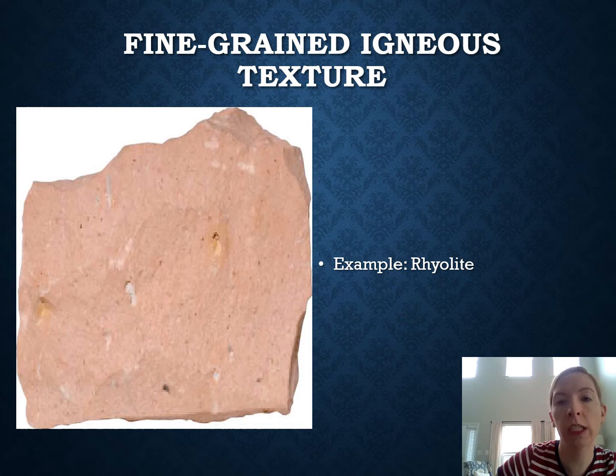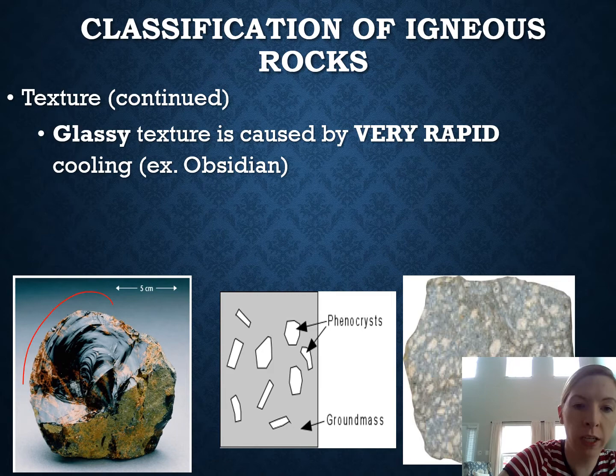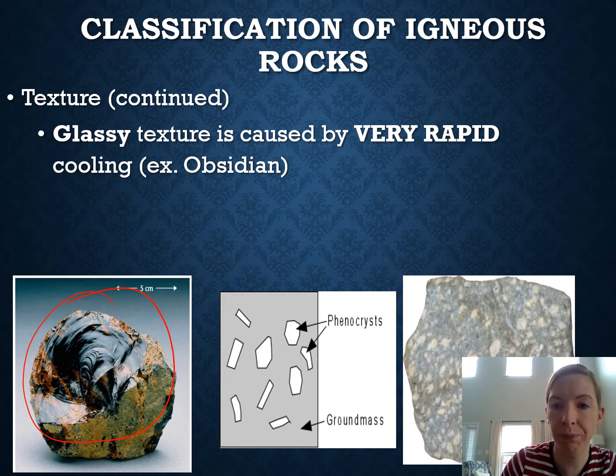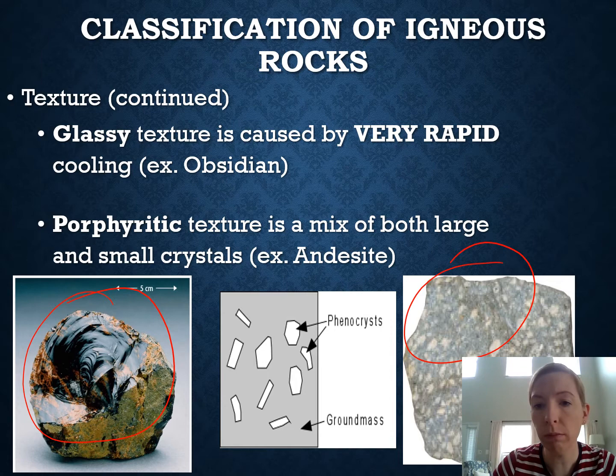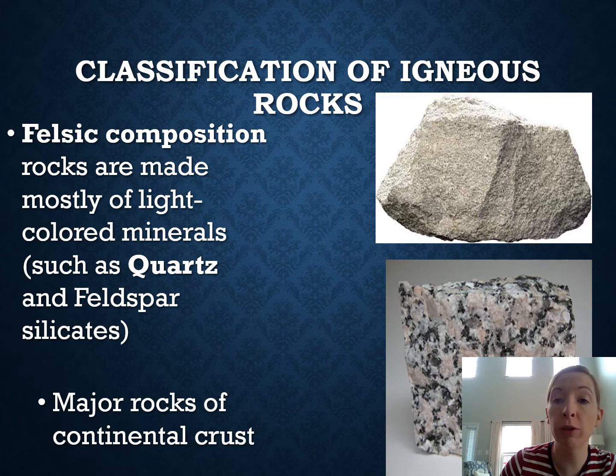Obsidian is an example of glassy texture — it cools very rapidly so no crystals can form. Porphyritic texture means the rock has two stages of cooling: slow and then fast. You can see large crystals mixed in with fine grains. Felsic refers to the mineral composition of an igneous rock.